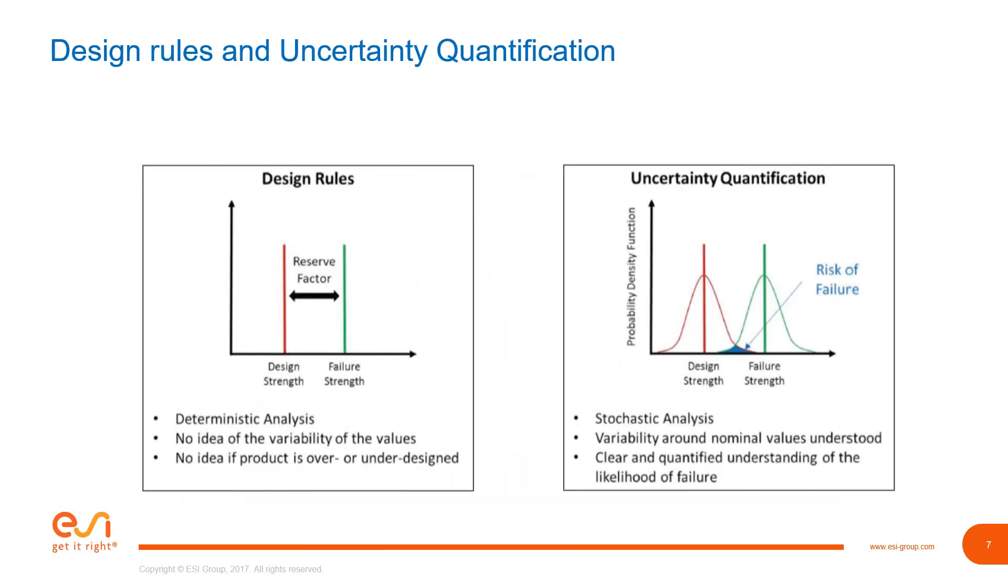You need to have a systematic approach to that. This is where we introduce this concept of uncertainty quantification and how the statistics would help you in building a robust design instead of just having design rules in a deterministic approach by taking into account a factor of reserve, making sure that you're keeping away from the failure strengths. The reality is that you don't have only one nominal value that you need to take into account but the distribution around this value.